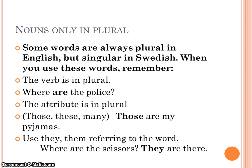Some words are always plural in English but singular in Swedish. When you use these words, remember the verb is in plural: where are the police? The attribute is in plural — meaning those, these, and many: those are my pajamas. When you refer to the word, use they: where are the scissors? They are there.